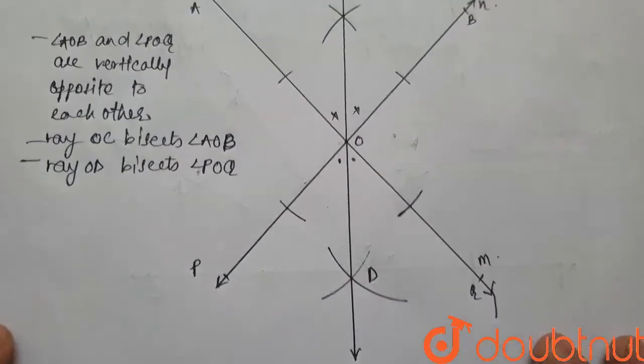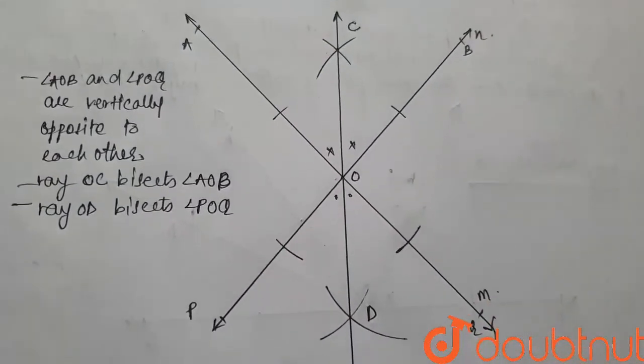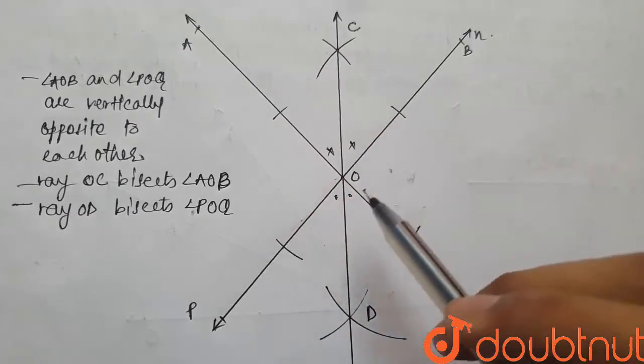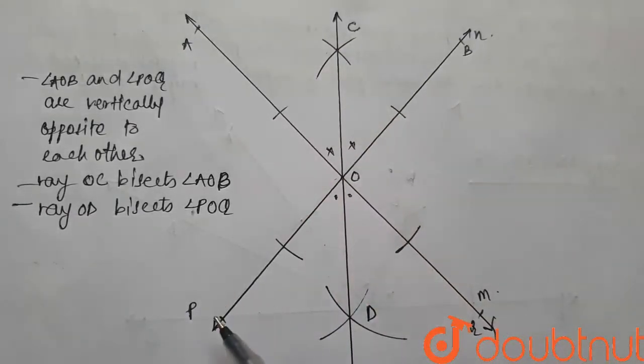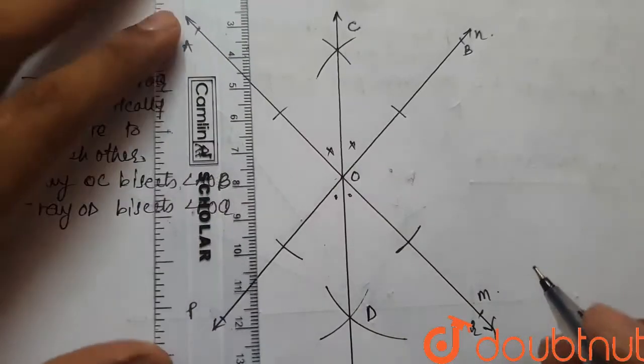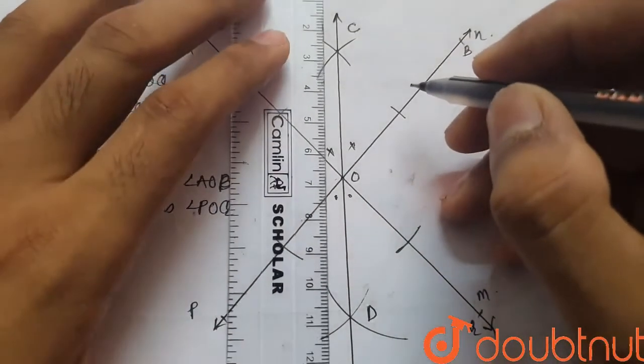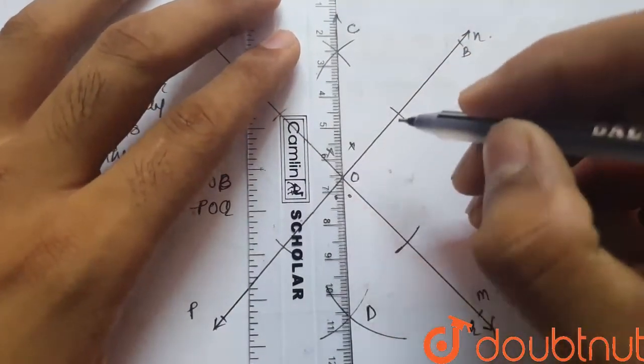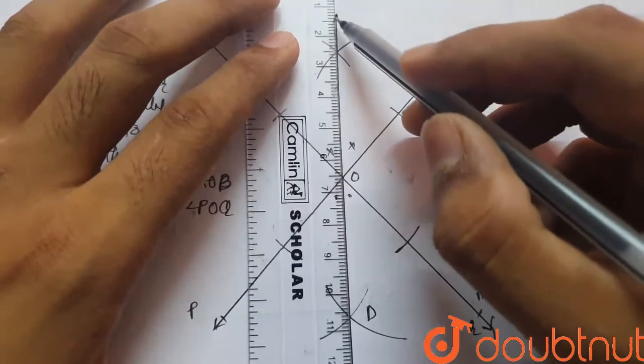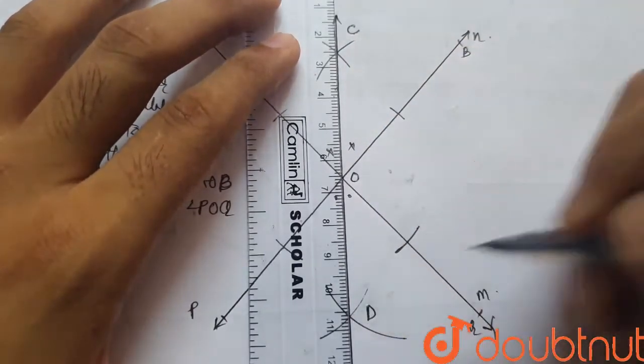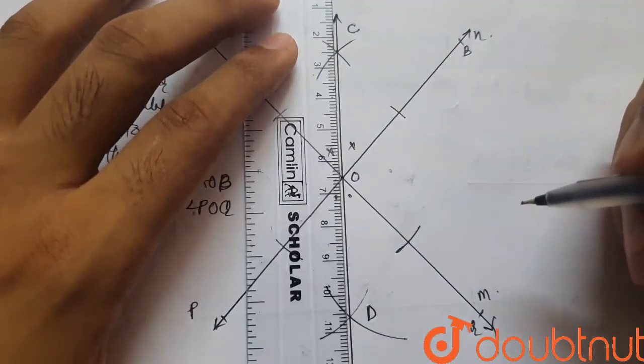Now, what we were asked in the question is to verify if Ray OC, which is the angle bisector of angle AOB, and Ray OD, which is the angle bisector of angle POQ, lie on the same line. So we use a scale, place it on both of these rays to verify this. And we see that all the three points, which is point C, point O and point D, lie on the same line.